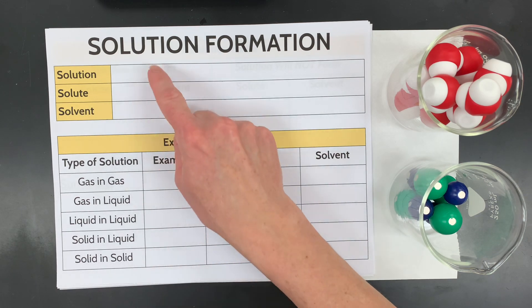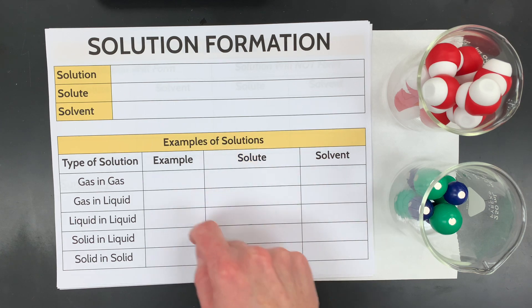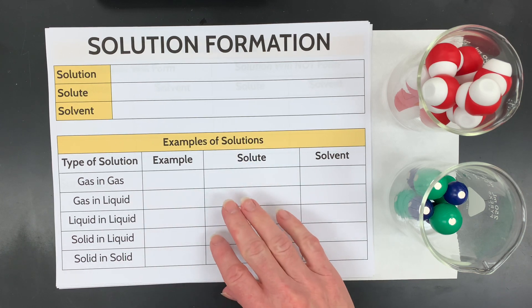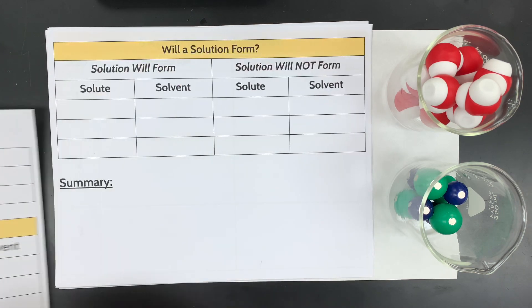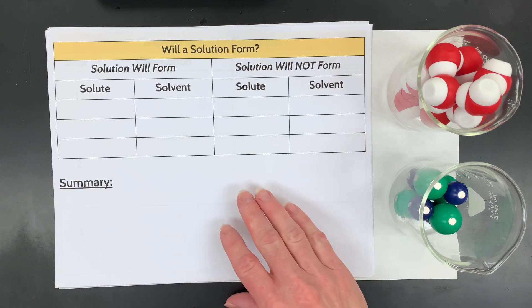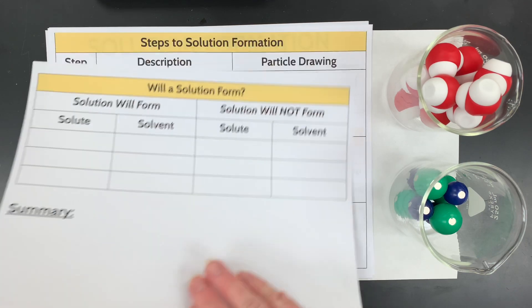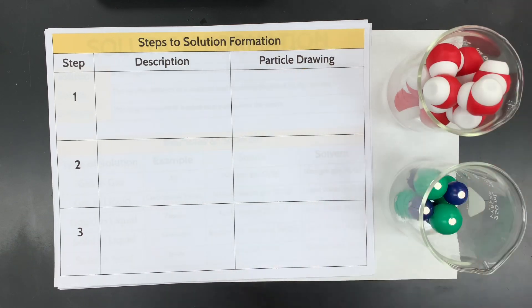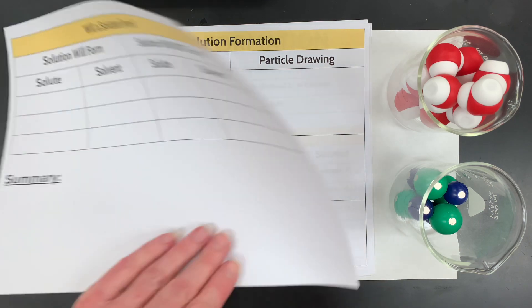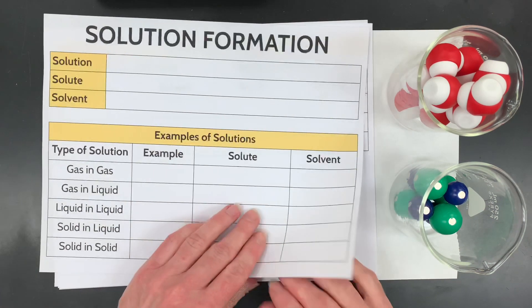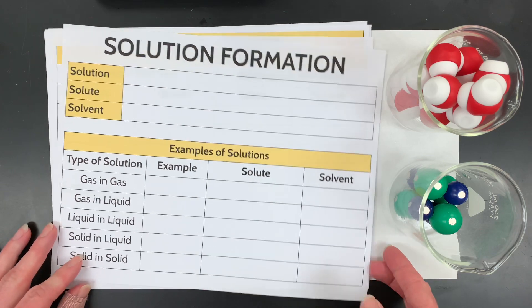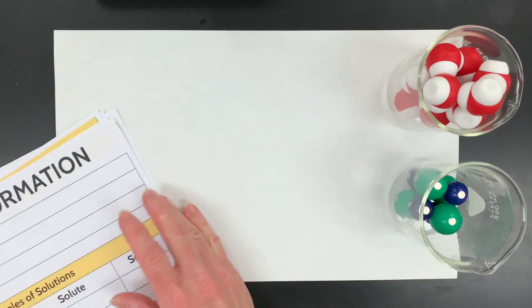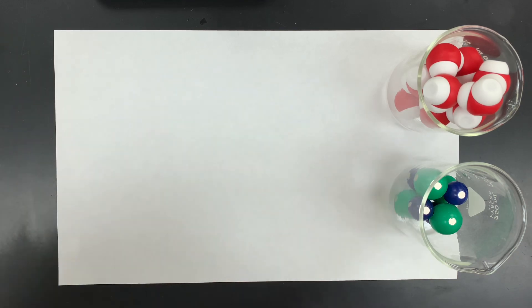What we're going to do is go over the definitions of solution, solute, and solvent, some examples, including all specific types with gases, liquids, and solids. We're going to talk about why will the solution form and how to predict it. And last but not least, we're going to go over the steps to how a solution is formed, and we're going to do some particulate modeling, and I'd like you to draw those in those spots.